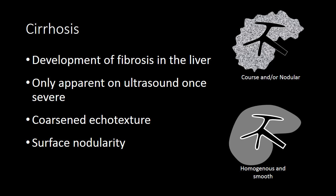Now let's switch gears and look at cirrhosis. Cirrhosis is the development of fibrosis in the liver, and oftentimes fibrosis is only apparent on ultrasound once it becomes very severe, or once it has truly developed into cirrhosis and not just early-stage fibrosis. We are looking for two different signs: one, coarsening of the echotexture. When the liver becomes fibrotic, the fibrosis creates a heterogeneous or coarse appearance to the liver parenchyma.